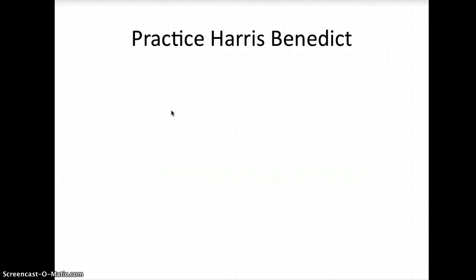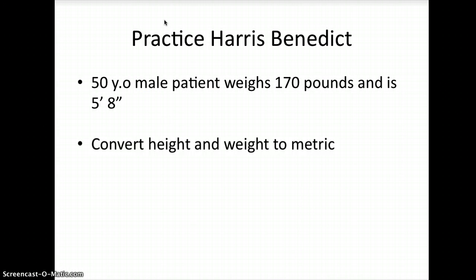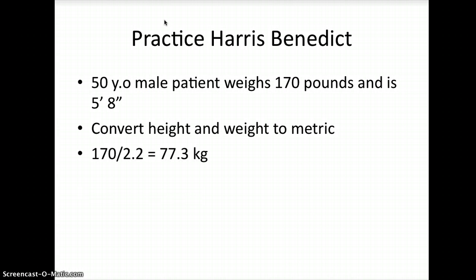First we're going to practice the Harris-Benedict equation. We're going to use a 50-year-old male patient who weighs 170 pounds and is 5 foot 8 inches tall. The first thing that we need to do is to convert height and weight to metric. To convert the weight to metric, we take 170 pounds divided by 2.2 to equal 77.3 kilograms. For the height, remember that 5 feet is 60 inches, so 60 plus 8 equals 68 inches. 68 inches times 2.54 converts to 172.7 centimeters. As I'm doing the equations, I'm going to round this off to 173.